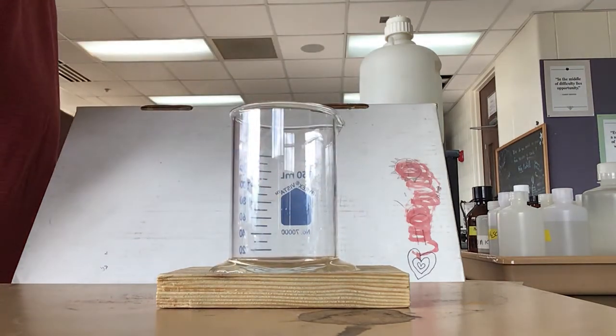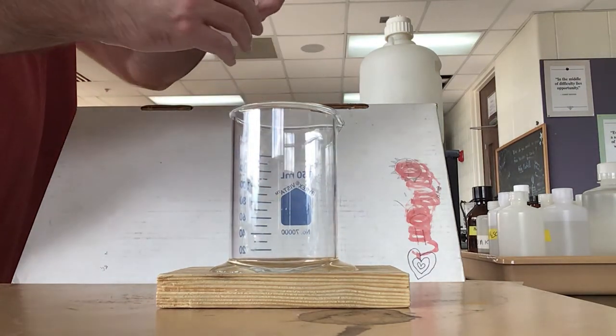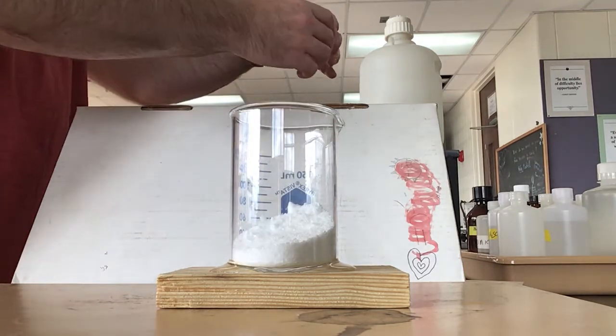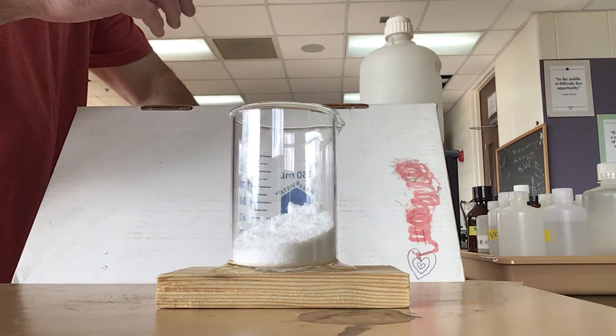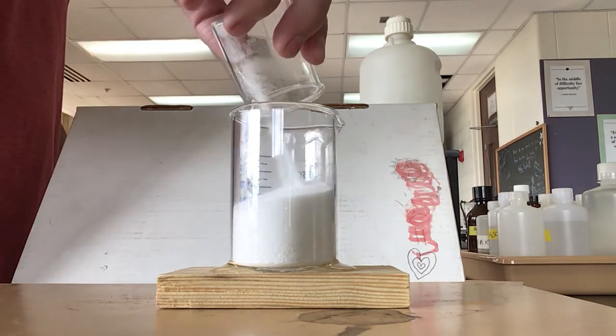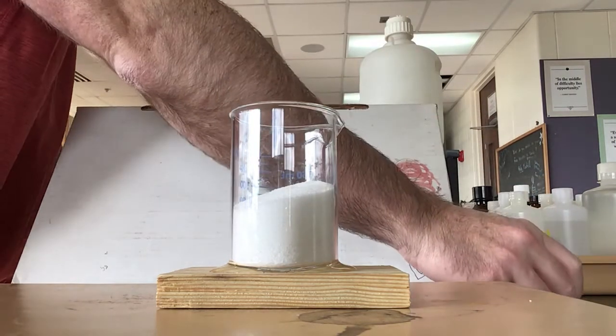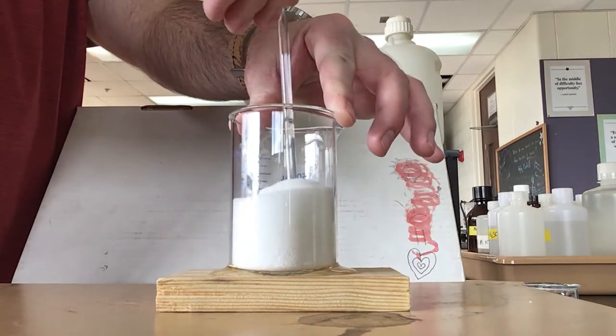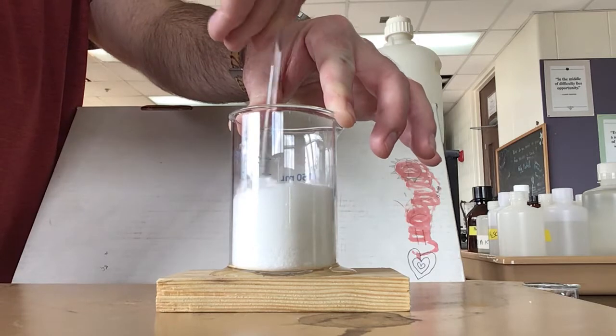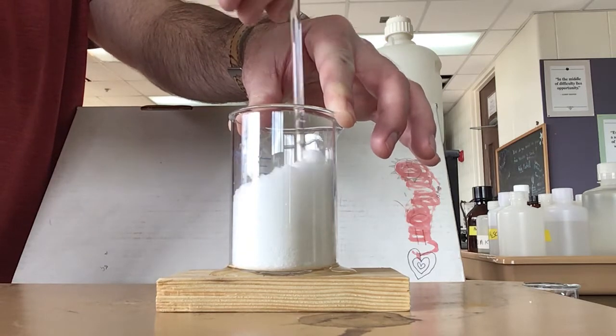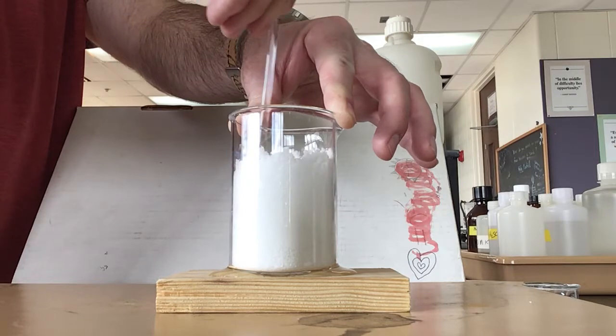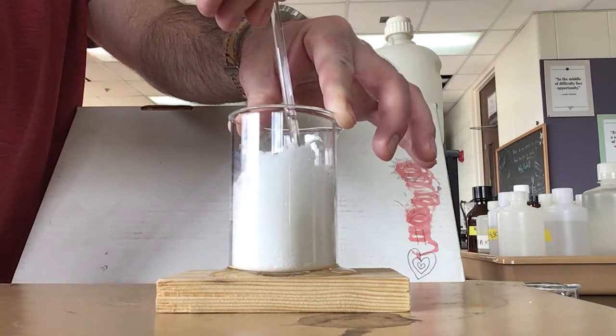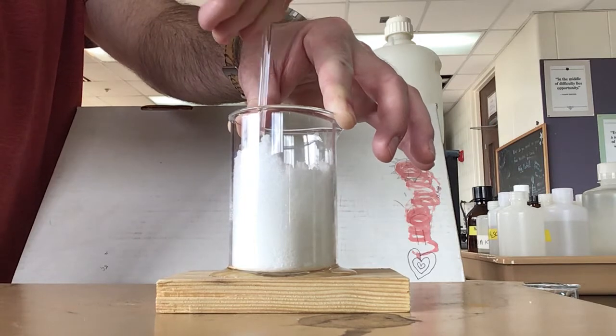We're going to set that on there, and I weighed out about 40 grams of barium hydroxide and going to mix in the ammonium chloride. Then we're going to stir these up. Now a lot of times two solids together wouldn't really have this process go, but this one does, which is pretty cool.